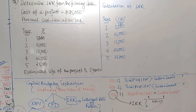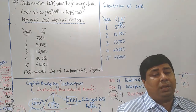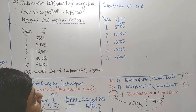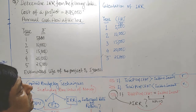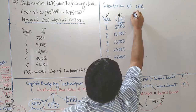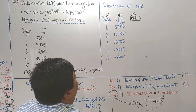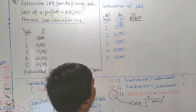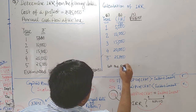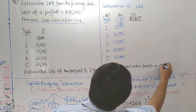Now, if you look at the question, no specific PV factor is mentioned. That is why, if it is not mentioned in the question, we are going to follow the trial and error method. As per your choice, you can consider — but basically I suggest that if no specific factor is provided, you can consider 10% PV factor straightforward. Let the present value factor be 10%.